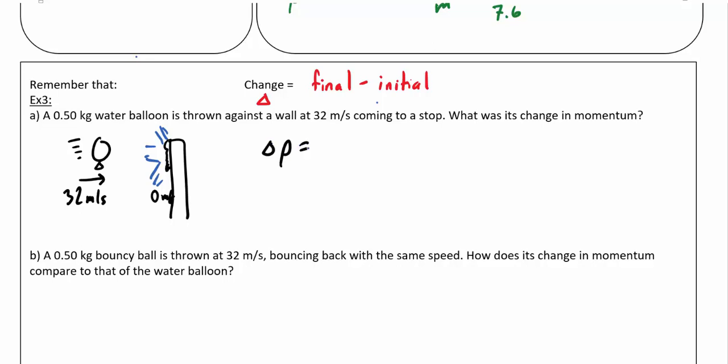A change in momentum is really a change in mv, but in most normal situations what's going to change is the velocity, not the mass. So in this case we can write this as m × Δv. Substituting in our mass, 0.50, and then final velocity being zero minus our initial velocity of 32 m/s, gives a change in momentum of -16 kg⋅m/s.